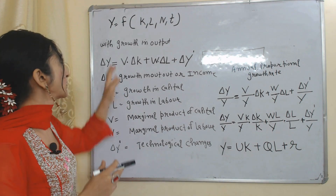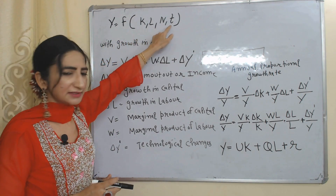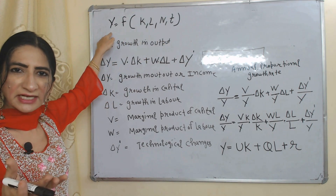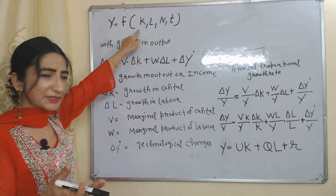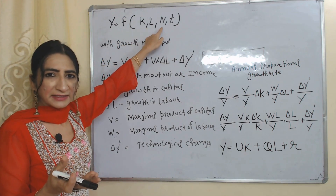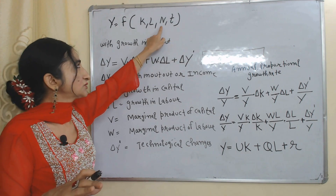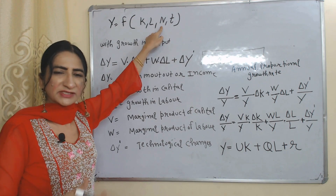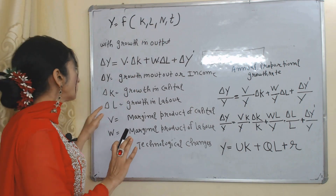Now we will see the equation of this model. Y is a function of K, L, N, and T. Here Y is national income or national output, K is capital, L is labor, N is land, and T is technology. In this model we assume N (land) is constant, so further we will not consider N.